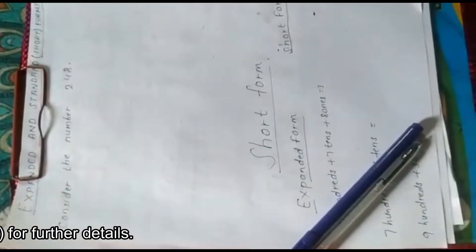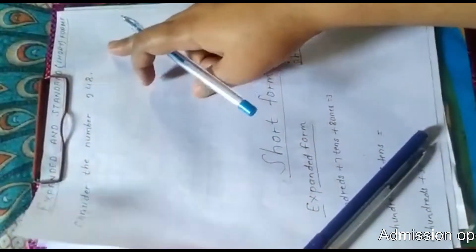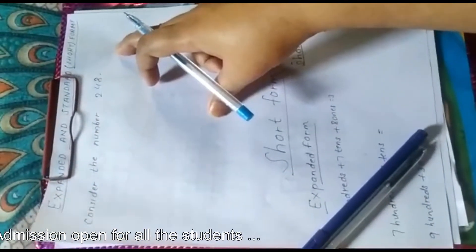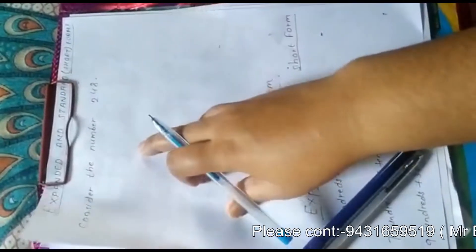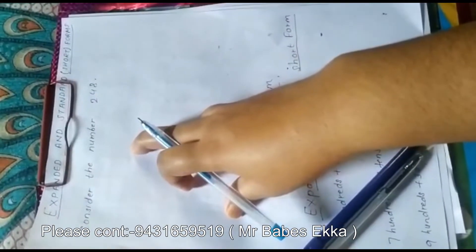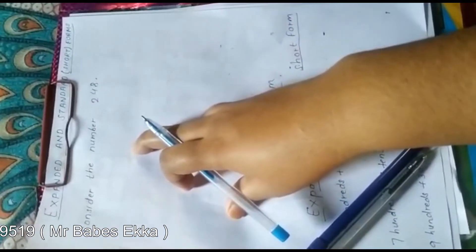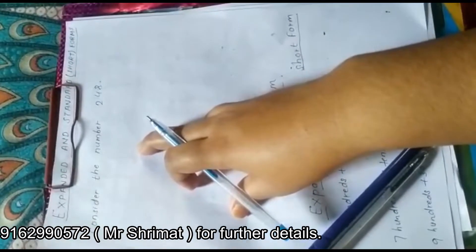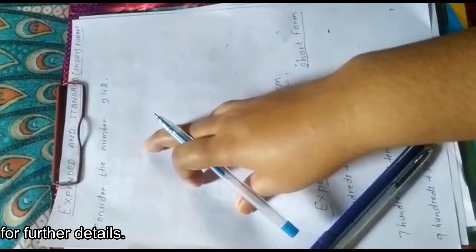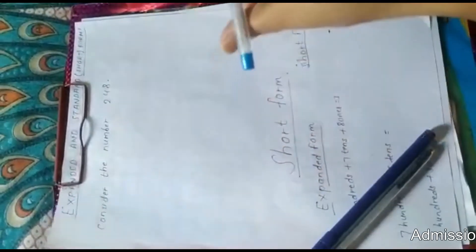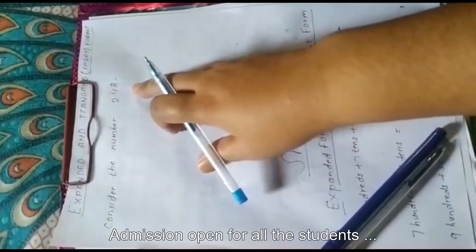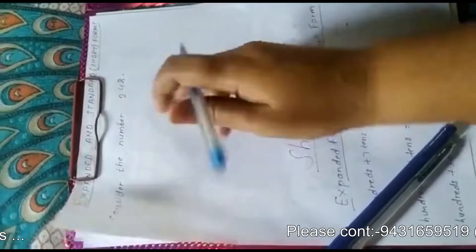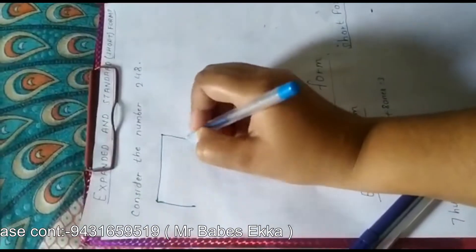Now our next topic is expanded and short form. The expanded form of a number is given by the sum of the place values of its digits. To write the expanded form, we write the sum of the place values. For example, consider the number 248. We will arrange the digits in a place value chart with ones, tens, and hundreds columns: 8 in ones, 4 in tens, and 2 in hundreds.